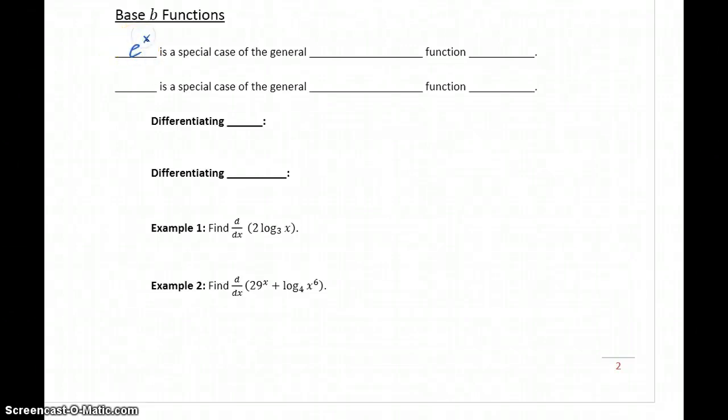The function e to the x is a special case of the more general exponential function b to the x, where b is any real number, possibly e, but any other real number.